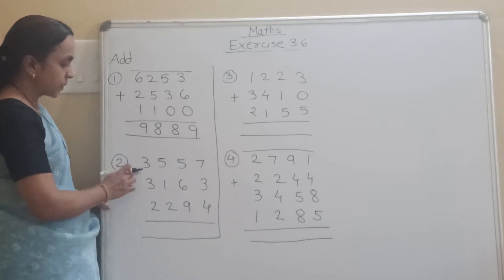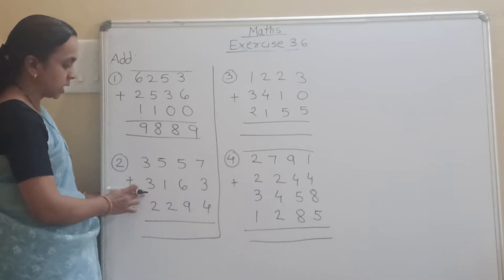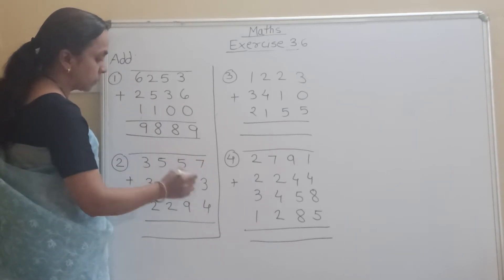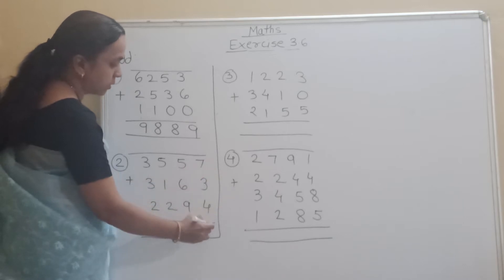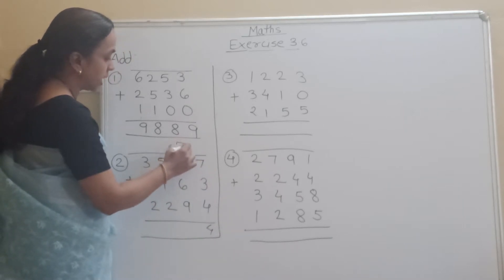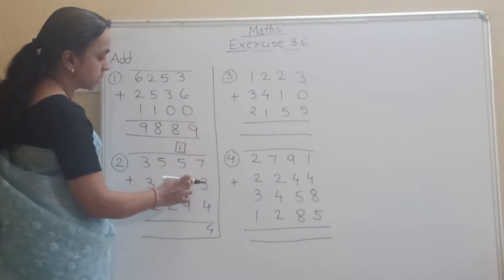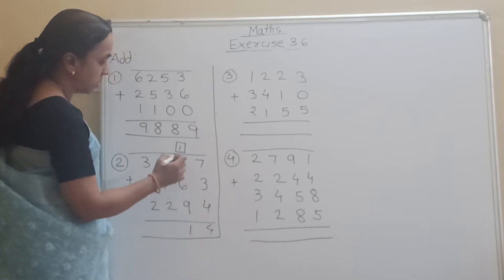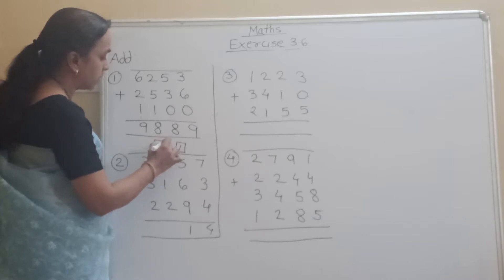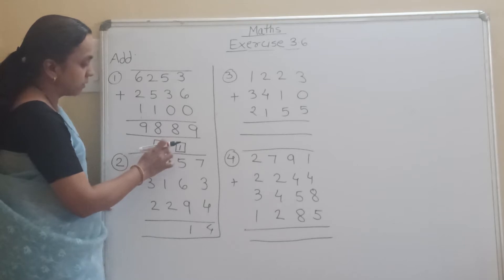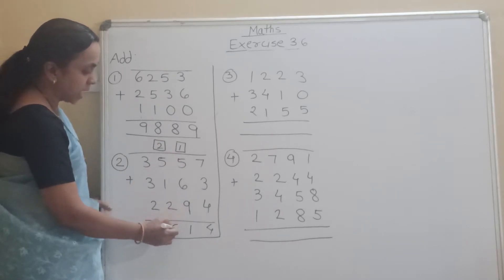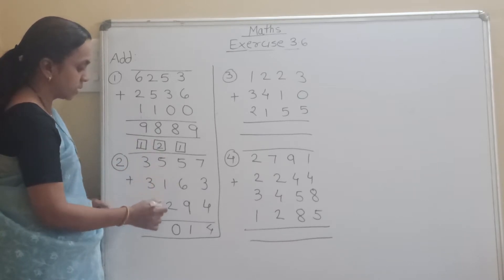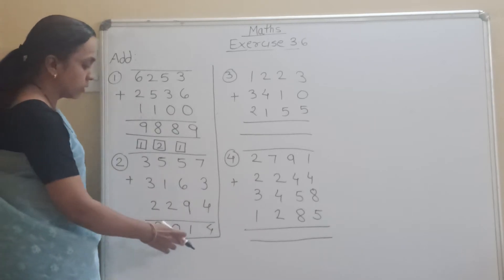Now see the second question: 3557 plus 3157 plus 3163 plus 2294. So 4 plus 3 is 7, 7 plus 7 is 14, carry 1. Write down 1. Then 5 plus 1 is 6, 6 plus 6 is 12, 12 plus 9 is 21. Write down 1, carry 2. Then 5 plus 2 is 7, 7 plus 1 is 8, 8 plus 2 is 10, carry 1. Then 3 plus 1 is 4, 4 plus 3 is 7, 7 plus 2 is 9. So the answer is 9014.